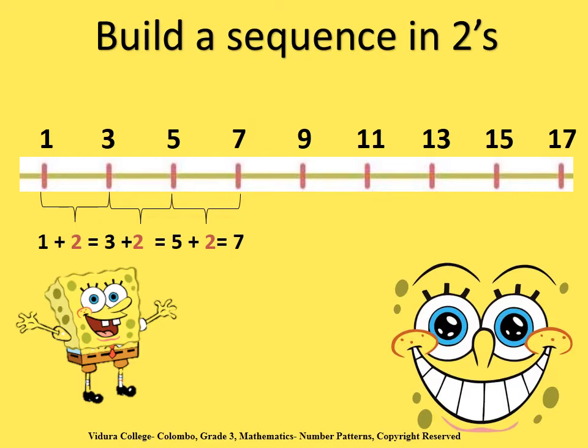Okay children, let's build a sequence in twos. Look at the number line given. The numbers in that number line are 1, 3, 5, 7, 9, 11, 13, 15, and 17. The gap between each and every number is 2. It is shown below. So 1 plus 2 equals 3, 3 plus 2 equals 5, 5 plus 2 equals 7. So the gap is shown in red colour.